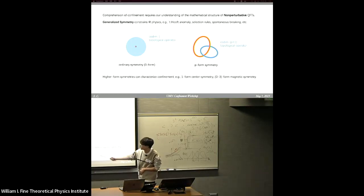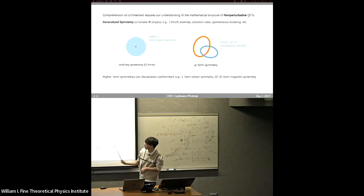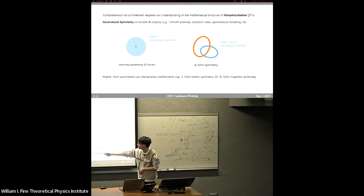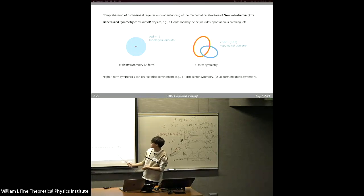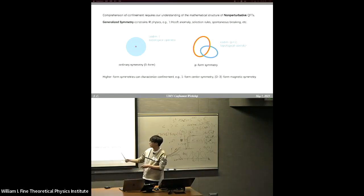Confinement is very tightly related to higher form symmetry. We know that we can characterize confinement by a one-form symmetry. For example, if we know that the center symmetry of Yang-Mills theory is not spontaneously broken, then we can see that we have a confinement phase. Similarly, on the dual side, if we see some magnetic higher form symmetry that is spontaneously broken, then we see that we have confinement here. So this is somehow a dual description.